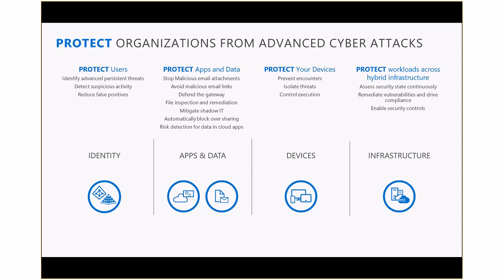The next vector is the device vector, which has been in existence for a very long time. Hackers typically gain access to environments by compromising devices — that's been a very popular attack vector. We offer quite comprehensive protection against that vector as well. And then the fourth vector is the infrastructure vector — ensuring that in hybrid environments with on-premises VMs, infrastructure, and networks, as well as resources distributed across Azure and on-premises and private clouds, the infrastructure vector is protected at all times.